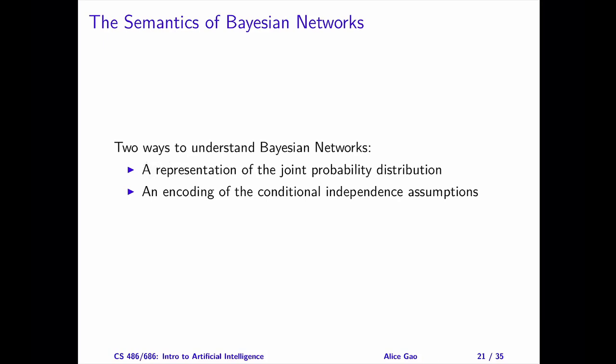Given a Bayesian network, we have enough information to recover every probability in the joint distribution. Second, a Bayesian network encodes many conditional and unconditional independence relationships between the variables.